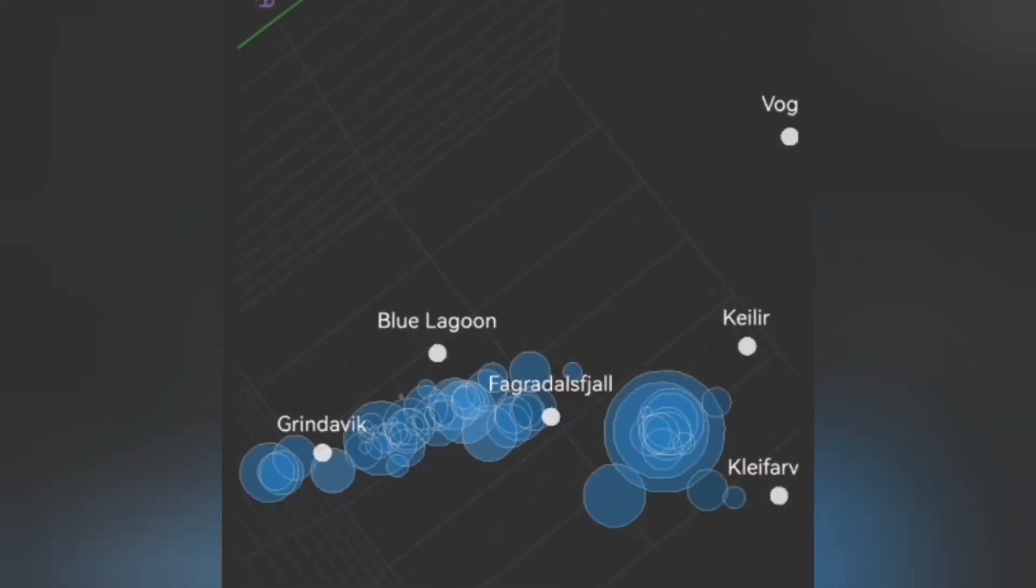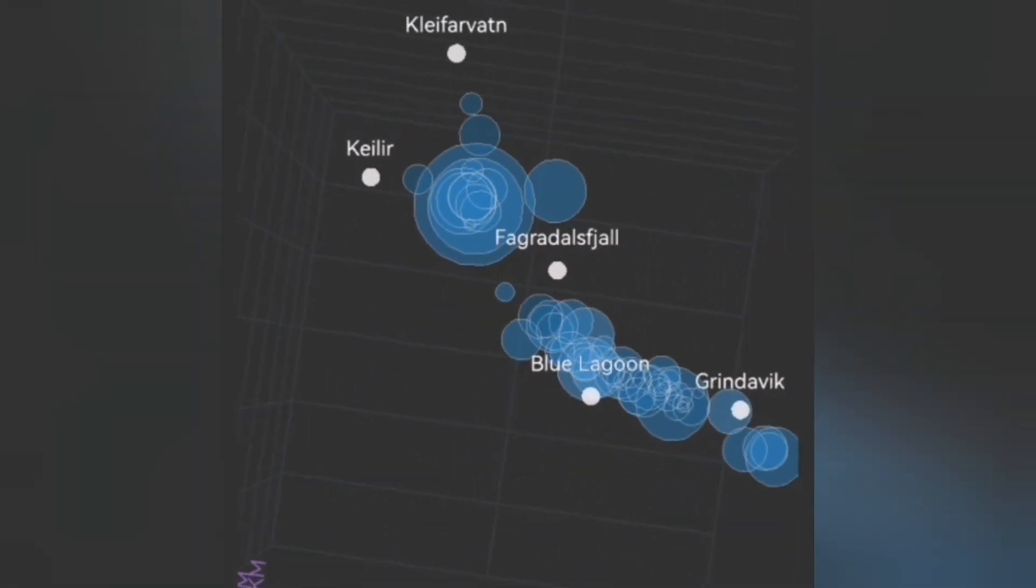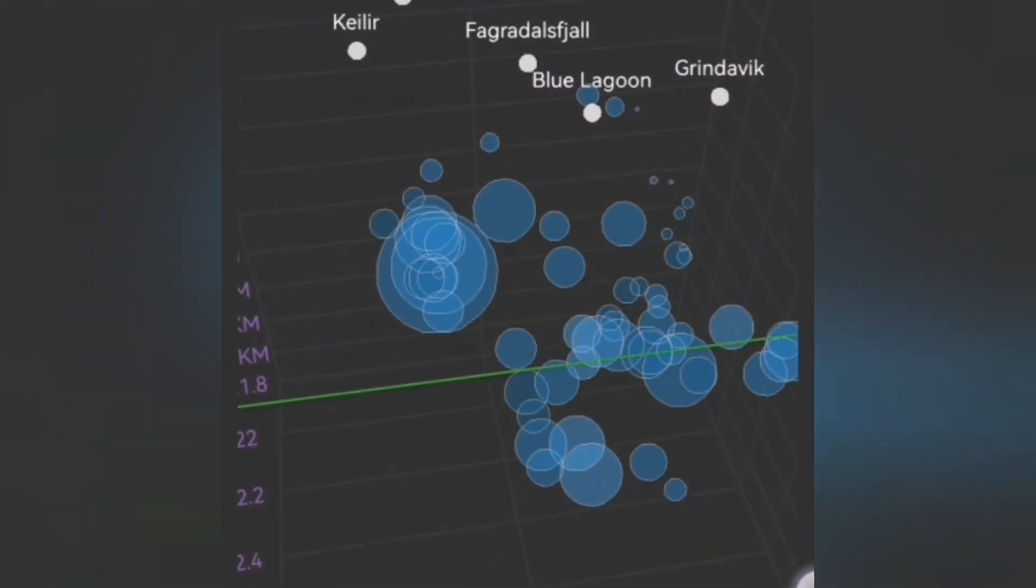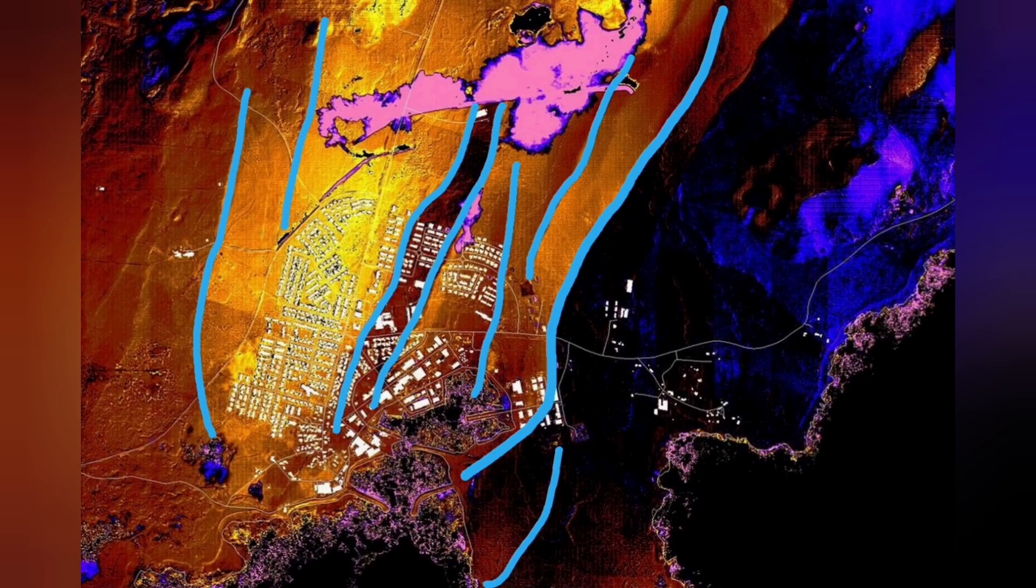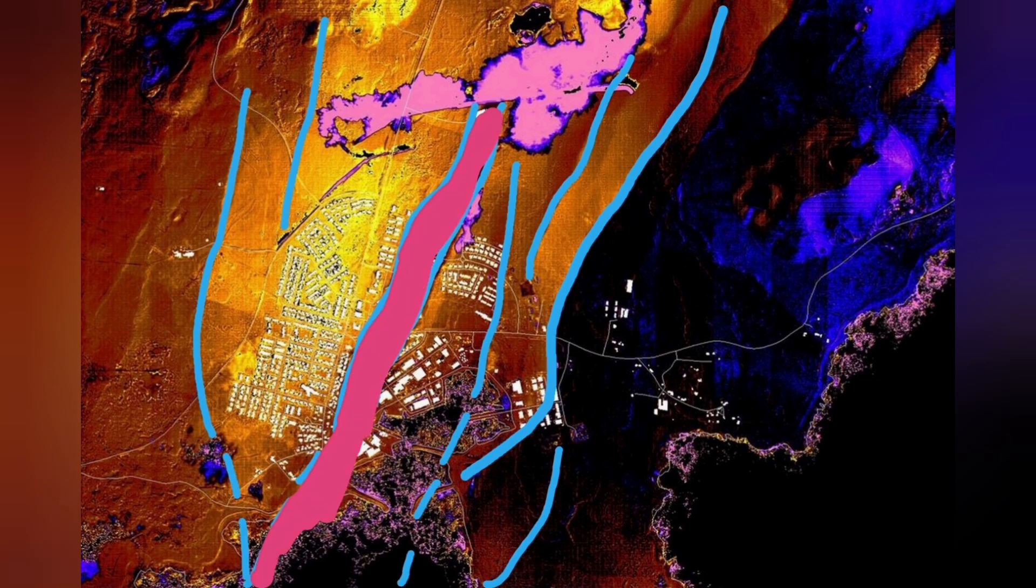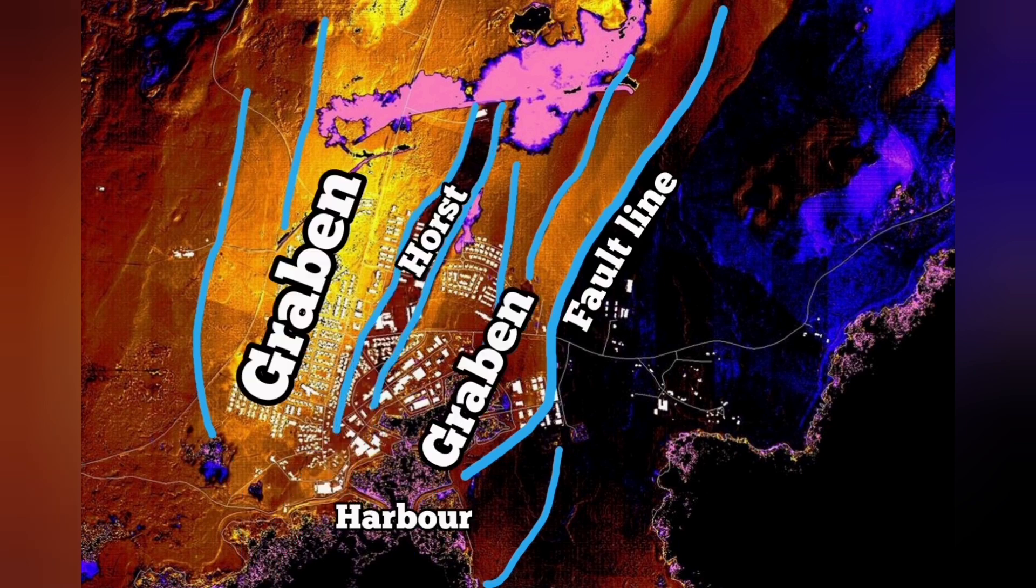Before that, we had it to the north of the Grindavík, in the Hagafell and Sundhnúkar, we had eruptions. In November, we had the earthquake, then December, eruption, and January, again, eruption. Through this graben that you can see in the middle part, and the fault lines, and the horst in the middle, we had cracks in the Grindavík. But no eruption. Magma was not there.